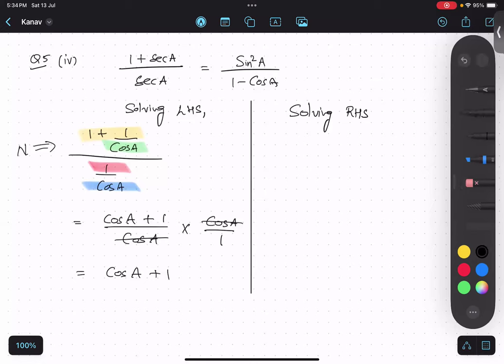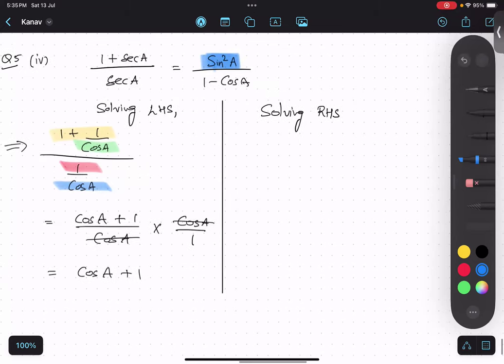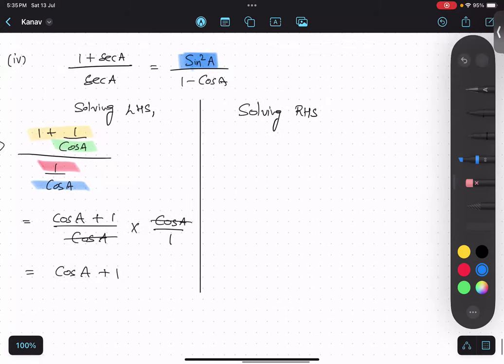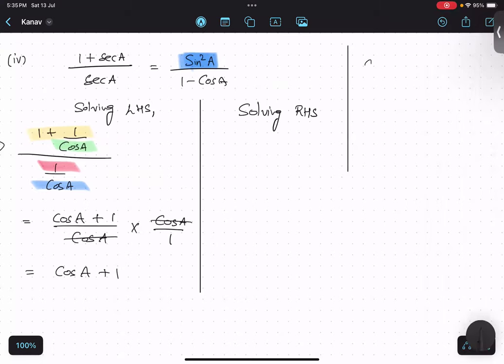So, let me just solve the RHS. Now, in the RHS, can you see the sin square? As soon as you see sin square, I guess you should know what identity we are going to use. Yes. What is the identity? Sin square plus that thing. Equals to one. Sin square. Yeah. Cos square A equals to one.